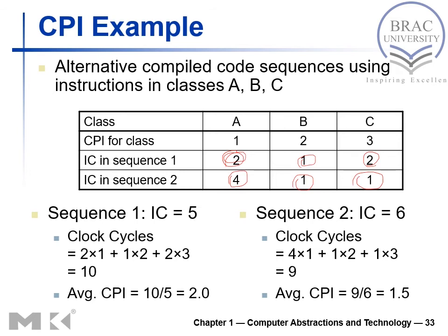Calculating clock cycles for Sequence 1: (2×1) + (1×2) + (2×3) = 2 + 2 + 6 = 10 clock cycles. Average CPI for Sequence 1 = 10 ÷ 5 = 2. For Sequence 2: (4×1) + (1×2) + (1×3) = 4 + 2 + 3 = 9 clock cycles. Average CPI for Sequence 2 = 9 ÷ 6 = 1.5. Therefore, Sequence 2 requires less time than Sequence 1.